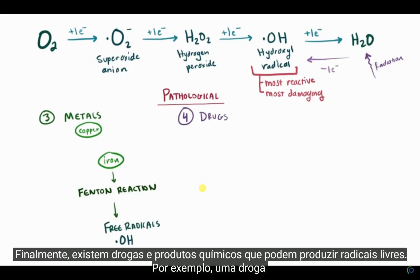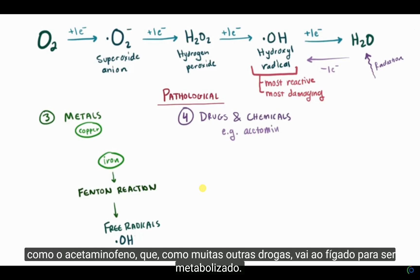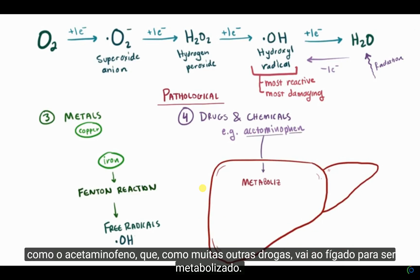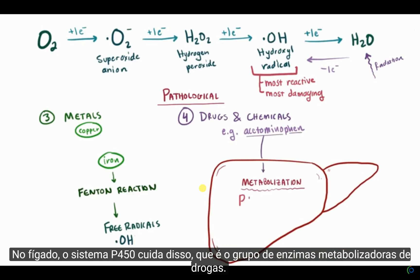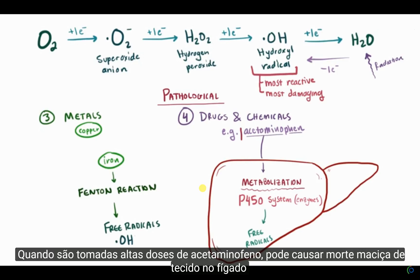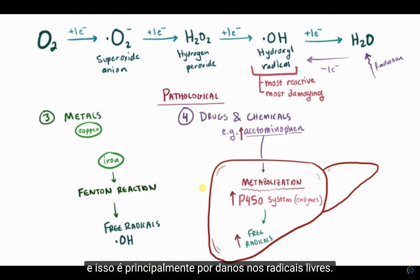There are also drugs and chemicals that can produce free radicals. For example, a drug like acetaminophen, like many other drugs, goes to the liver to be metabolized. In the liver, the P450 system takes care of it — this group of really important drug-metabolizing enzymes. This metabolizing can generate free radicals, and so when high doses of acetaminophen are taken, it can cause massive death of tissue in the liver, mainly from free radical damage.